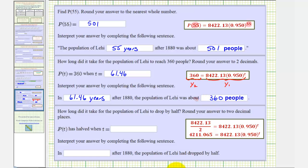And now our last question, we want to know how long it would take for the population of Lehi to drop by half. Round your answer to two decimal places. Well, for consistency, we're going to use the initial population from the model, not from the table of values. The initial amount according to the model was 8,422.13, or the value of a. So to find half this amount, we would take this and divide by two, which would be our function value. And our goal is to find the value of t that would give us this function value.